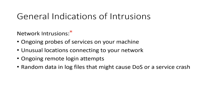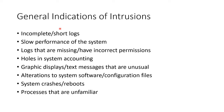For network intrusions, you have outgoing probes of services on your machine — traffic going out of your network. You have unusual locations connecting to your network, outgoing remote login attempts where something on the inside is trying to log in to something out on the internet, which is especially unusual for servers. You have random data in log files that might cause a denial of service or a service crash, incomplete or suspiciously short logs, systems performing poorly, logs that are missing or have incorrect permissions, holes in the accounting, unusual graphics displays or text messages, alterations to system software or config files, systems crashing and rebooting, or unfamiliar processes.